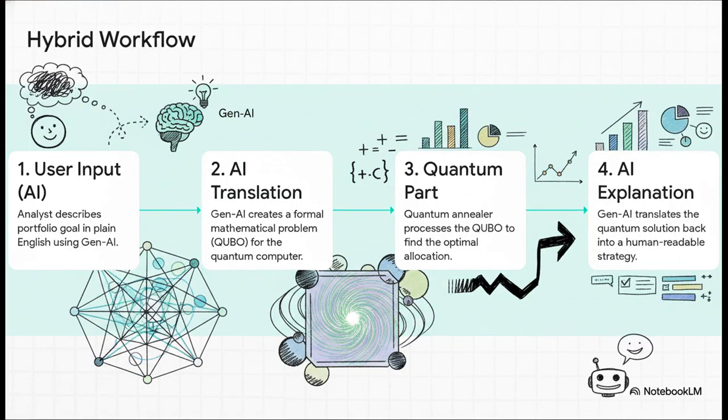Step one, a financial analyst just describes what they want to do in plain English. No complex code. Step two, the Gen AI acts as the ultimate translator. It takes that plain English and turns it into the super-specific mathematical language, a QUBO, that the quantum computer needs. Step three, the quantum computer gets to work, does its thing, and solves that gnarly optimization problem. And finally, step four, the Gen AI steps back in and translates the quantum computer's dense, math-heavy answer back into a clear, human-readable strategy you can actually use. It's a perfect handshake between the two.